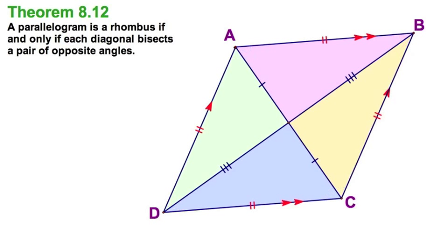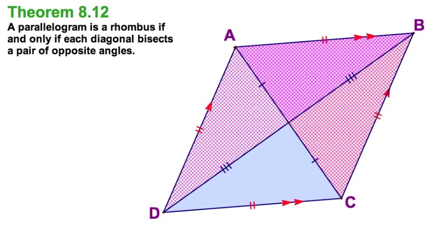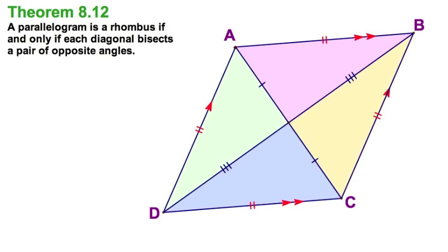Conversely, let's start with the sides congruent. And clearly, you've got four triangles congruent by side, side, side. Then I could conclude that the corresponding angles are congruent. Either way, we've proven 812 in both directions.